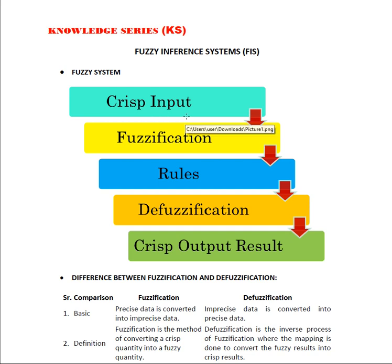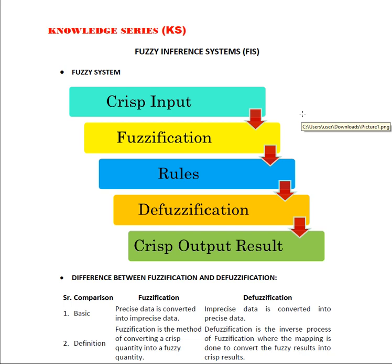Under fuzzification, we have two variables: one is input crisp elements, and another is fuzzified or membership values. The third block is rules. In the rules, we try to see how this particular input needs to be put under the rules. There are various rules. If you have gone through previous slides, I have talked about these rules, like if-then, if-then-else. Those are the rules used under fuzzy rules.